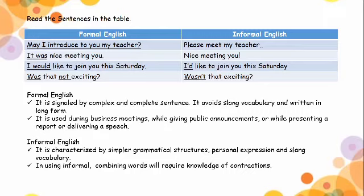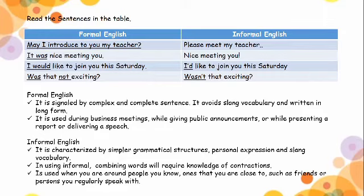See the difference? So always remember that in informal English, words are being combined or contracted. Now, when do we use informal English? We use informal English when you are around people you know — ones that you are close to, such as friends or persons you regularly speak with. You do not use informal English with new acquaintances or people you just met. Instead, we use formal English when we are talking to people whom we just met or new acquaintances.